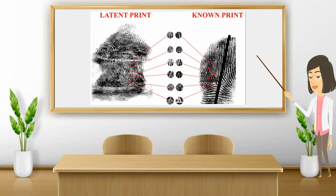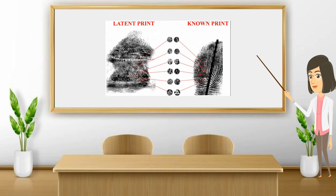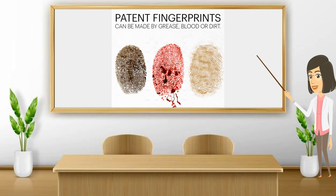The first type is the latent print. Latent prints need chemical treatment in order to make them visible — without chemical treatment these prints are not visible. We use special chemicals on these prints to make them visible and lift them from the spot. Patent prints, by contrast, are already visible and need no treatment, so they can be lifted easily.